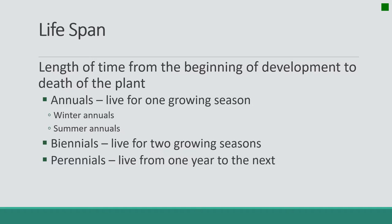Our perennials are our longest-lived plants. They will live from one year to the next, where they grow, build up, accumulate biomass, and produce seed, then overwinter, and then the next year will grow, build up biomass, and produce seed and overwinter. They will do this over and over again until they die.